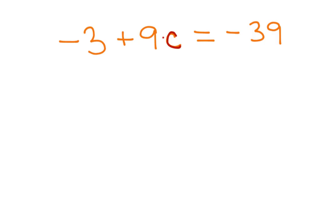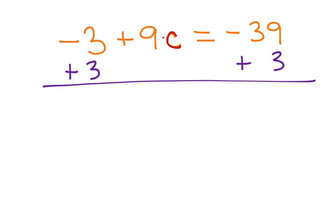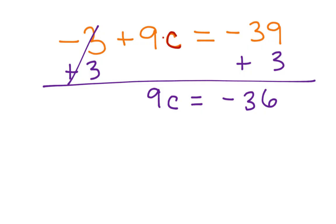We have times 9 and we have plus a negative 3. So we're going to undo our adding and subtracting first. We want to get that negative 3 to a value of 0, so we use positive 3 to get a zero pair. That leaves behind 9C equals negative 36 on this side. They're different signs, so we subtract them.